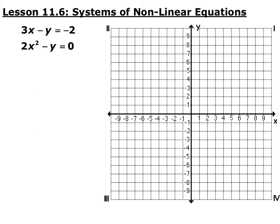So here in this system we have 3x minus y equals negative 2, which is linear. But then we have 2x squared minus y is equal to 0, which is parabolic.